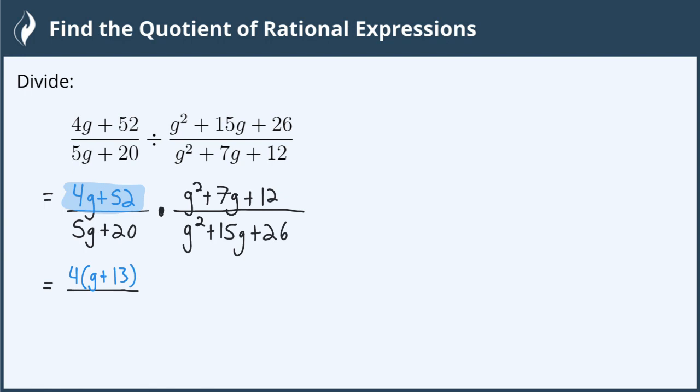Let's also factor the denominator. 5g plus 20 has a greatest common factor of 5. When we pull out a 5, we are left with g plus 4.